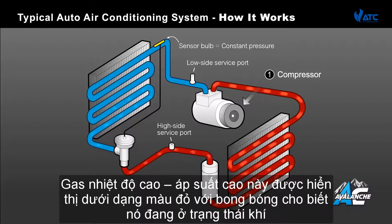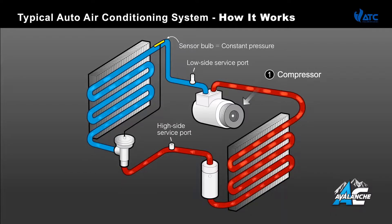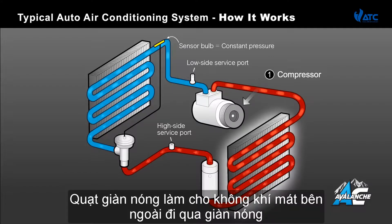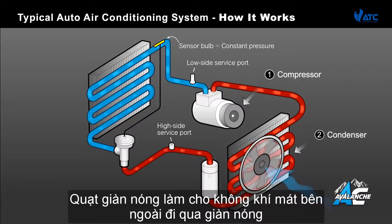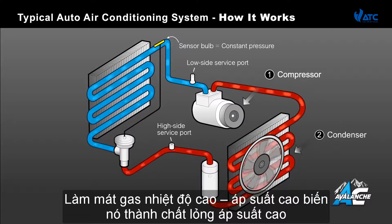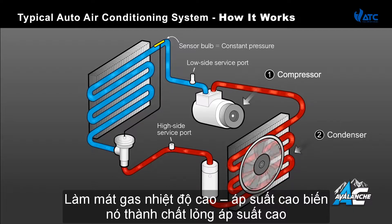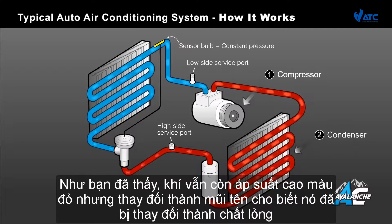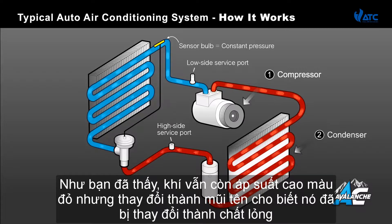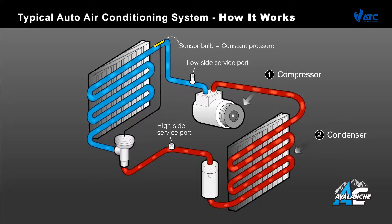This high pressure, high temperature gas is shown as red with bubbles, indicating it's in a gas state. The condenser does just that. Cool air flows across the condenser, cooling the high pressure, high temperature gas, turning it into a high pressure liquid. As you can see, the gas remains red but changes to arrows indicating it's changed to a liquid.